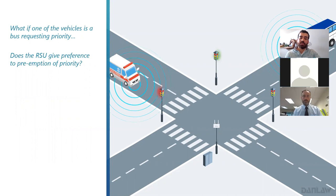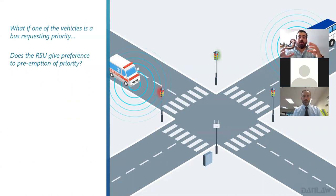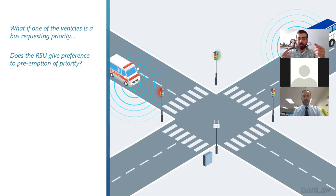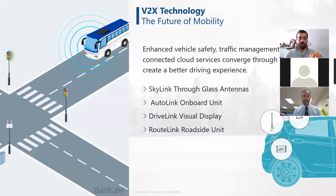The third corner case is when both a priority call and a preemption call arrive simultaneously. The answer here is clear: preemption is always an emergency call, priority is non-emergency, and the traffic controller won't accept a priority call over a preemption call. There is still a debate about whether the RSU or the traffic controller should have the capability to decide which vehicle has priority.